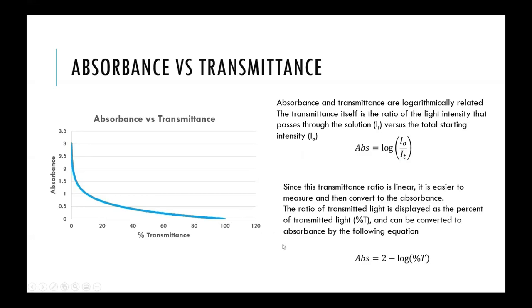They're related through this equation: you can easily convert between one and the other, where absorbance is equal to two minus the log of the percent transmittance. This percent transmittance is the whole number. So if the percent transmittance was 60%, the absorbance would be two minus the log of 60. You don't have to convert it to a decimal.